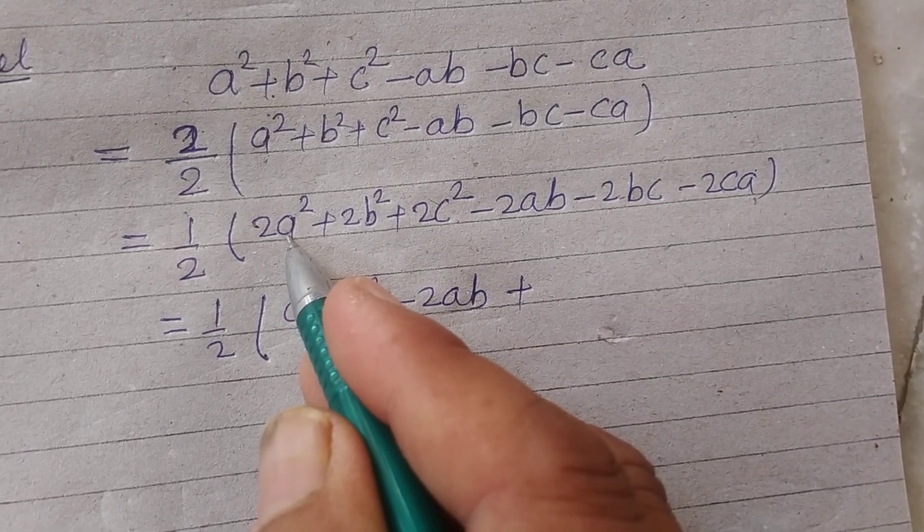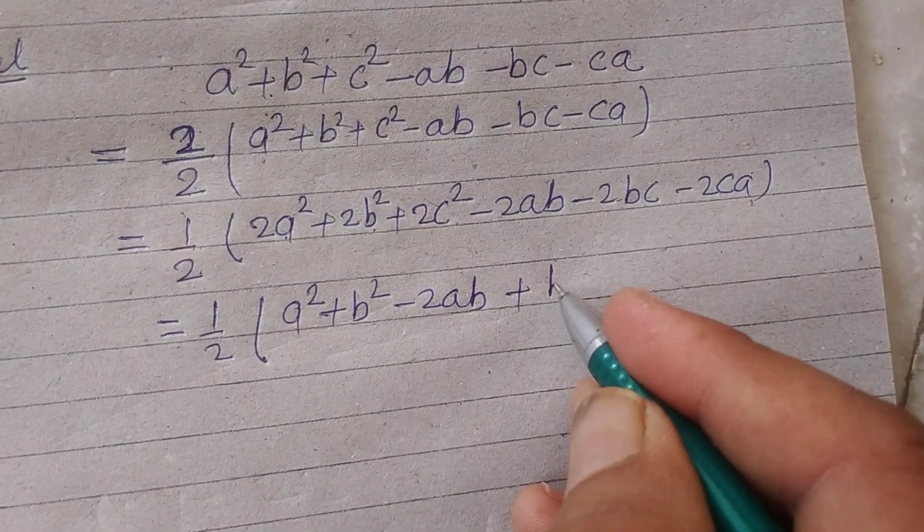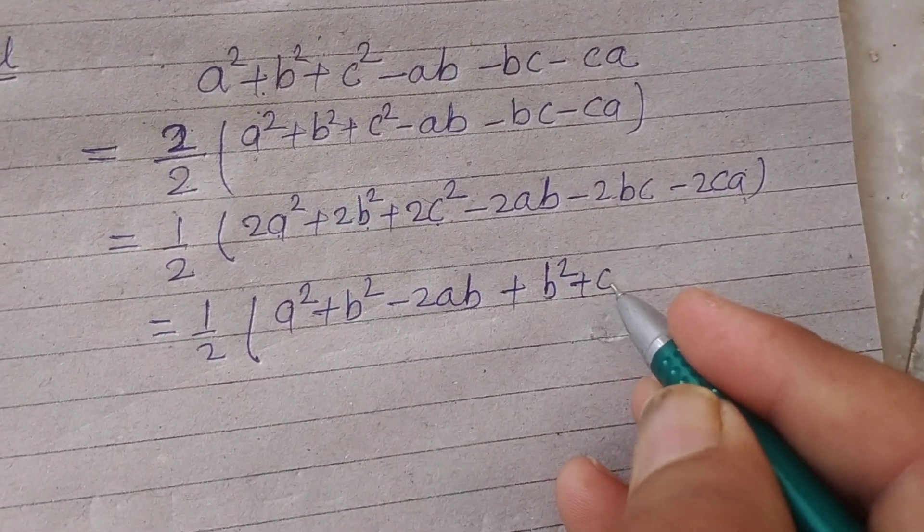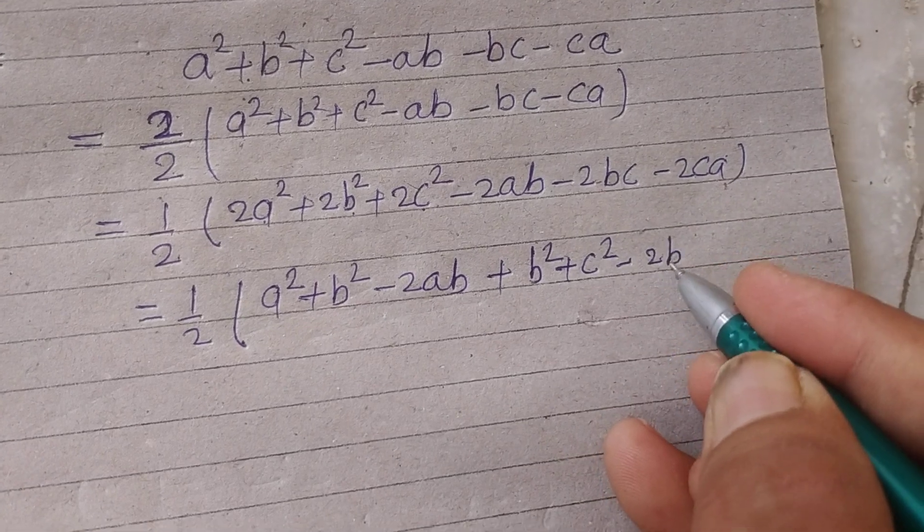Now a², b² from this and c² from this minus 2bc.